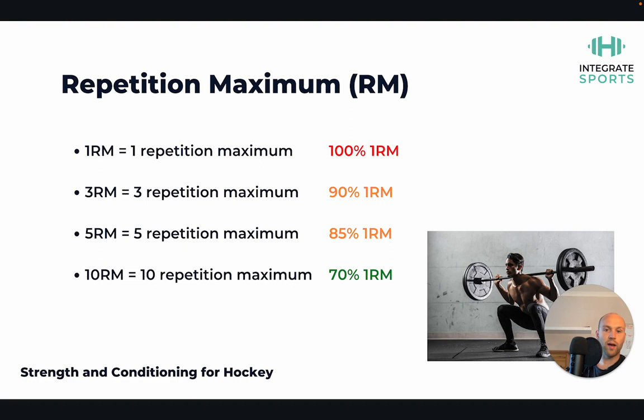Rating of perceived exertion, or RPE, is a scale out of ten measuring how hard something should feel. If you're lifting five reps at an 8 RPE, it should feel like 8 out of 10 difficulty — really hard but with one more in the tank. If the load feels like 6 out of 10, it's too light and you should go heavier.